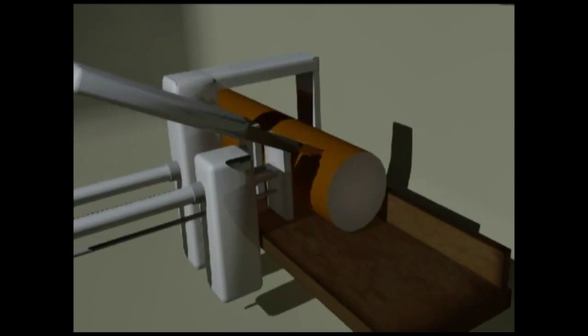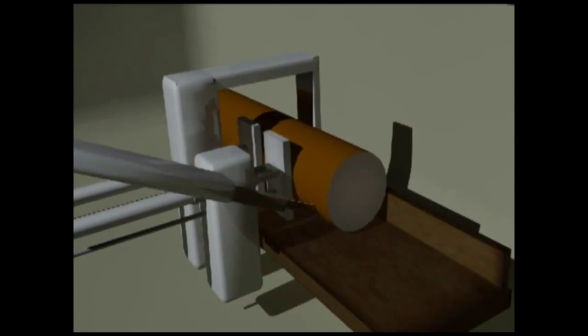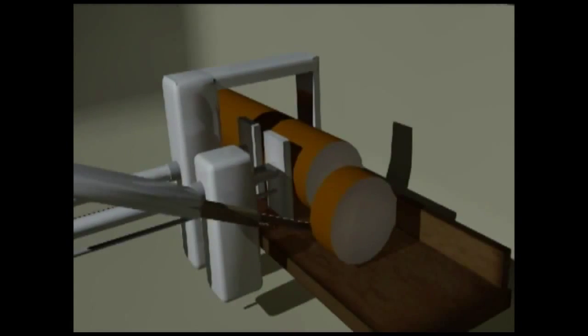An automated bandsaw slices off a piece that's the right thickness for the size of gear they're making. This piece is called a gear blank.